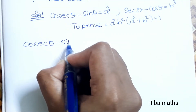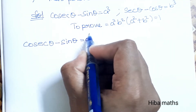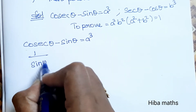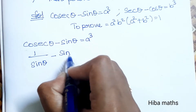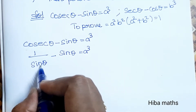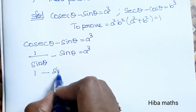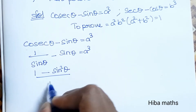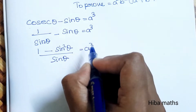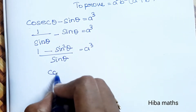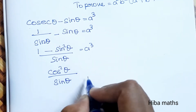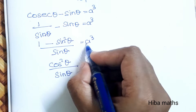Cosecant theta minus sin theta is equal to a cube. Cosecant theta equals 1 by sin theta, so substituting: 1 by sin theta minus sin theta is equal to a cube. Taking LCM and cross multiplying: 1 minus sin square theta divided by sin theta, which is equal to a cube.